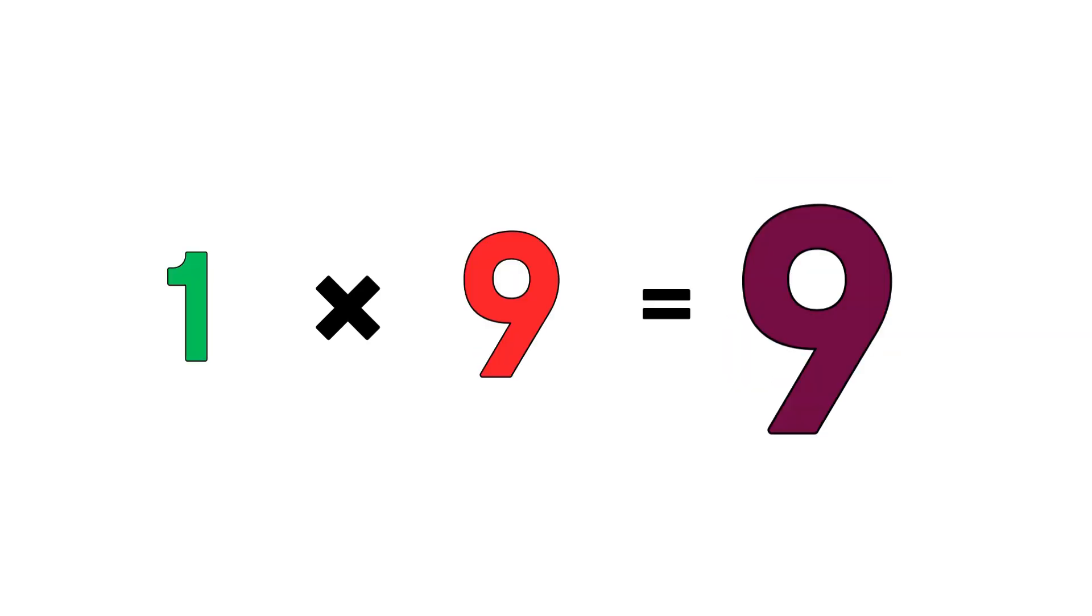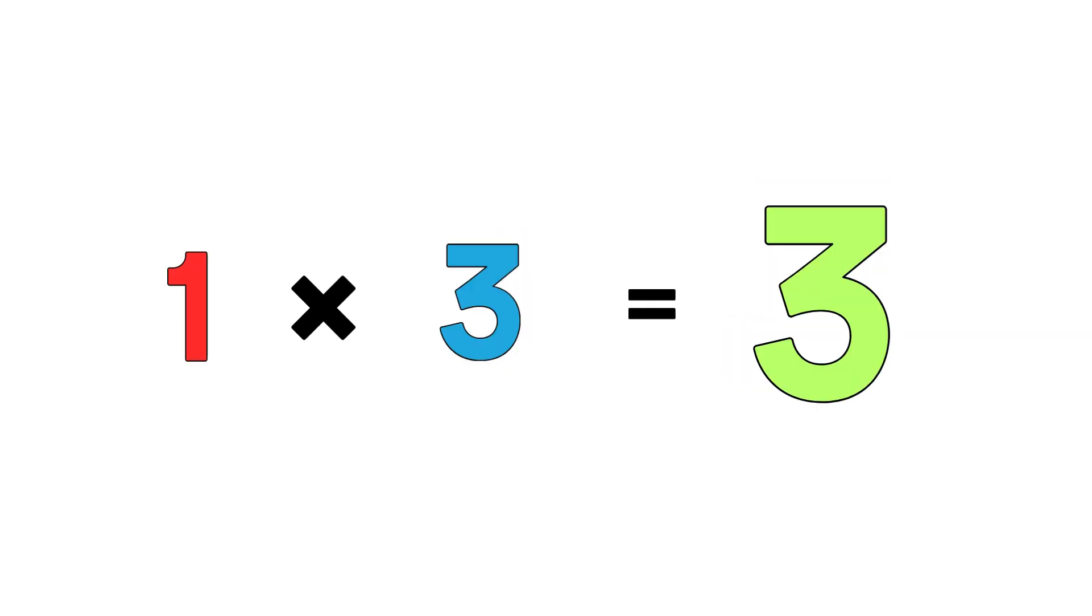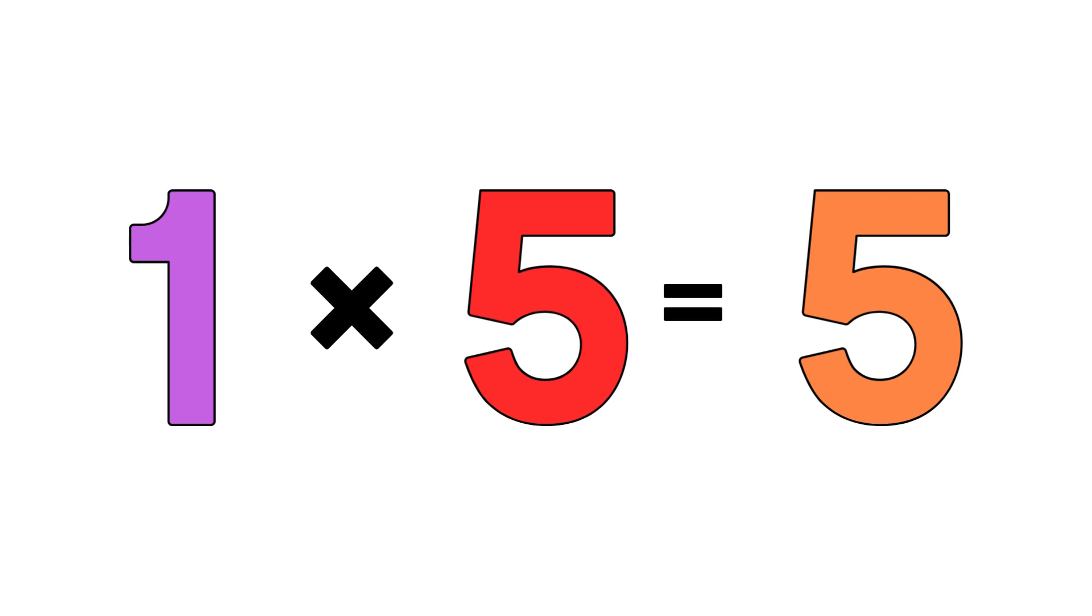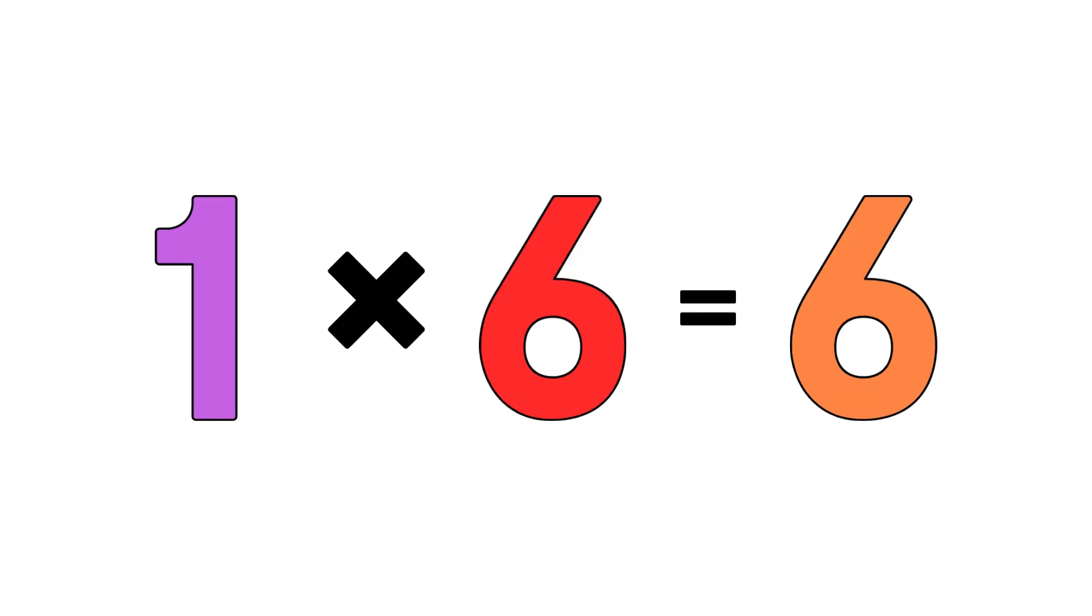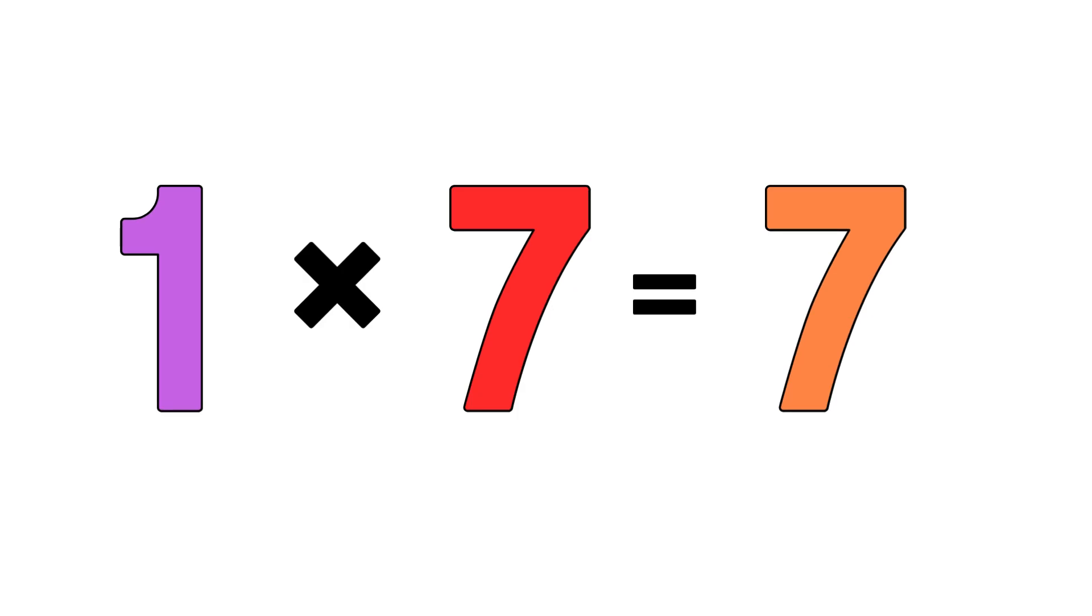It's the one times table, let's count it all the way. One times five is five, we're getting smarter every day. One times six is six, it's simple and it's fun. One times seven is seven, we're almost halfway done.